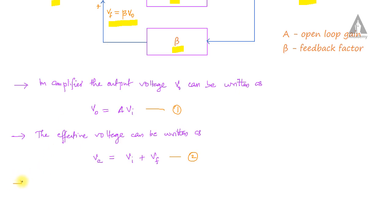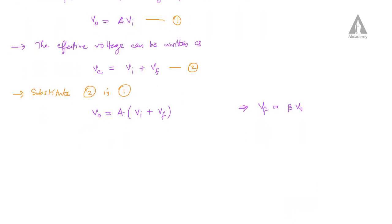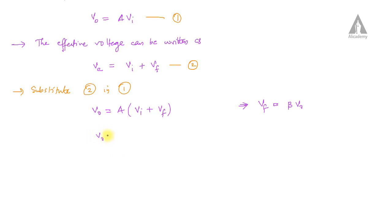Now we are substituting equation two into equation one. We get V0 equals A times (Vi plus Vf). We know that Vf equals beta times V0, so we substitute that value. So we can write: V0 equals A·Vi plus A·beta·V0.